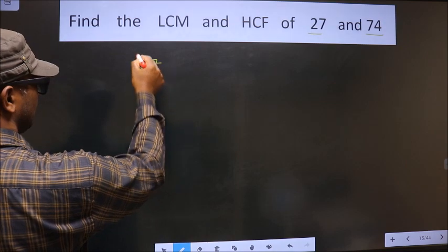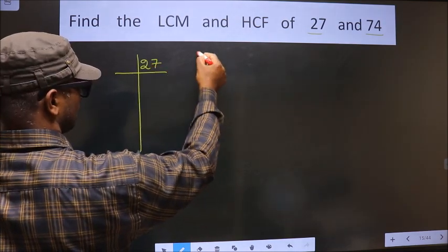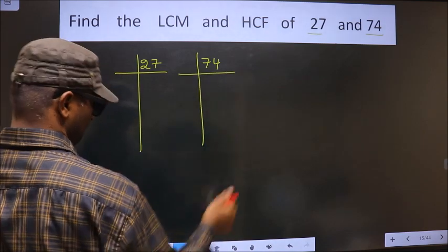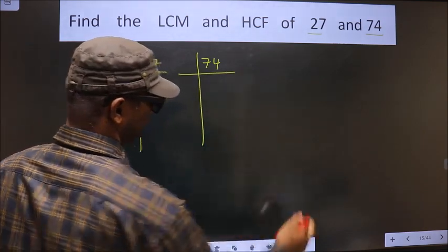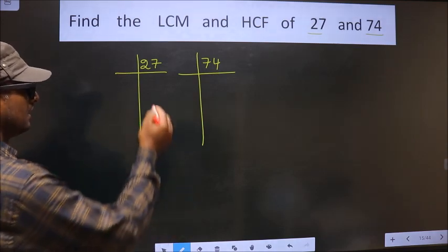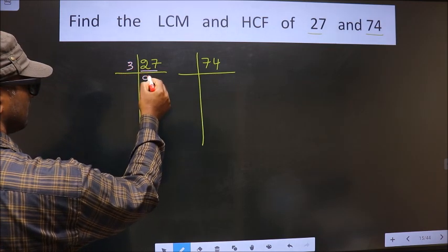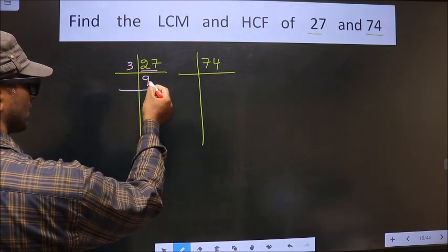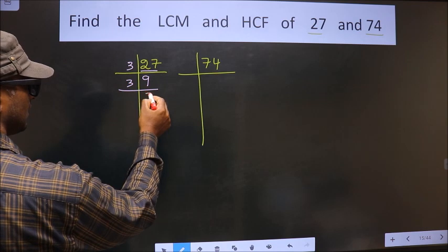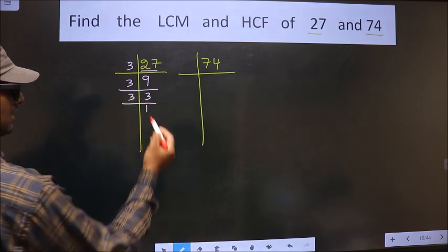27, 74. Now here we have 27. 27 is nothing but 3 times 9. 9 is 3 times 3. 3 is a prime number, so we take 3 once, giving us 3.